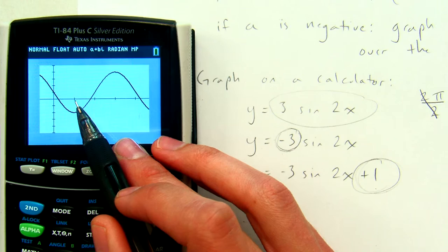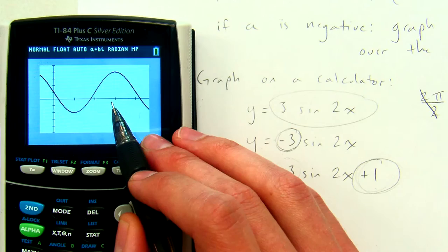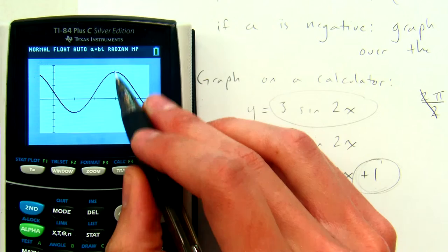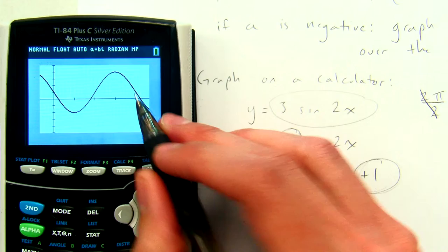Instead of its minimum point being at first quarter comma negative 3, which is what we'd expect from the amplitude, it's at first quarter comma negative 2. And instead of its maximum point being at third quarter comma 3, which is what we'd expect from the amplitude, it's moved up 1. It's at third quarter comma 4. Okay? And the graph ends at the end of the game, which is pi comma 1 instead of pi comma 0. So everything has moved up 1.